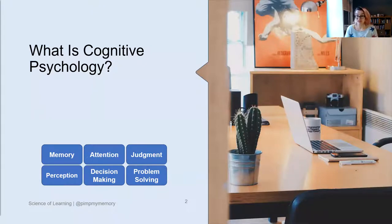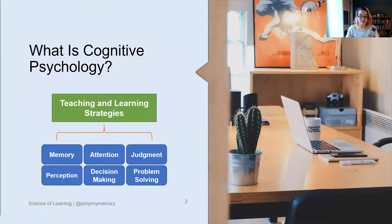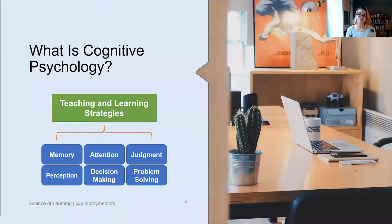One thing that is really striking is that all those different aspects of human cognition are really important for teaching and learning, and can inform teaching and learning strategies in the classroom. This applies to classrooms in primary school and secondary school, but also in higher education. And it also applies to different disciplines, so these strategies can be applied across different disciplines.